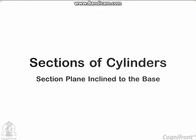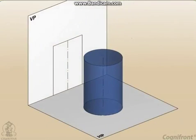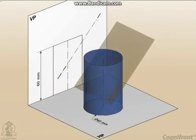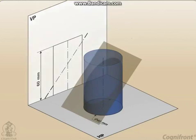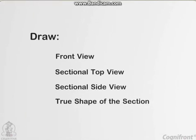Section Plane Inclined to the Base, Problem 14.17. A cylinder of 40 mm diameter, 60 mm height, having its axis vertical, is cut by a section plane perpendicular to the VP, inclined at 45 degrees to the HP and intersecting the axis 32 mm above the base. Draw its front view, sectional top view, sectional side view, and true shape of the section.